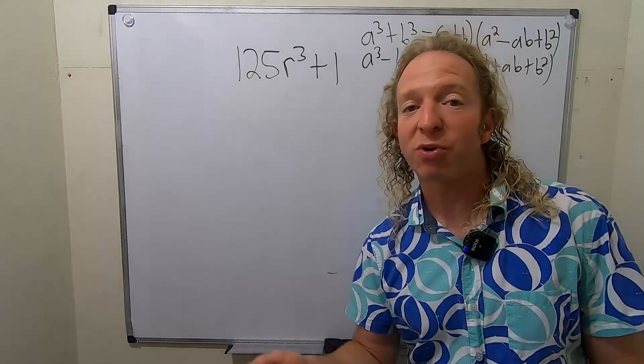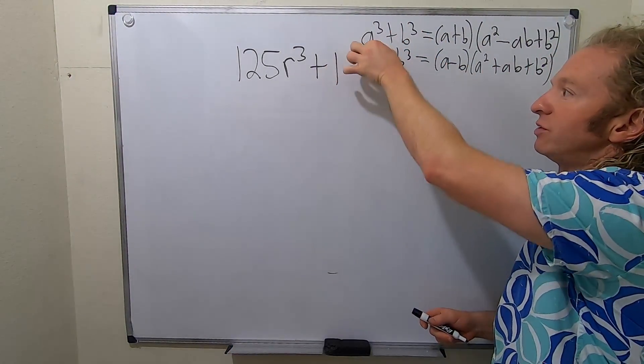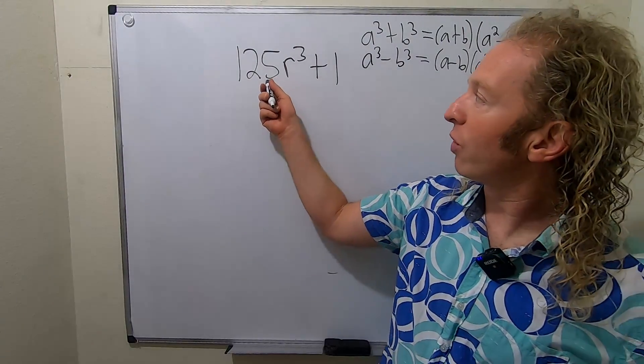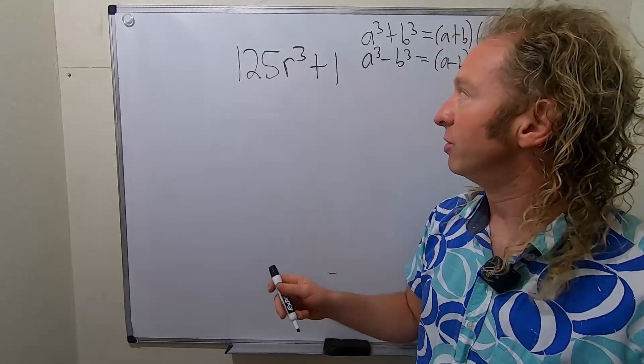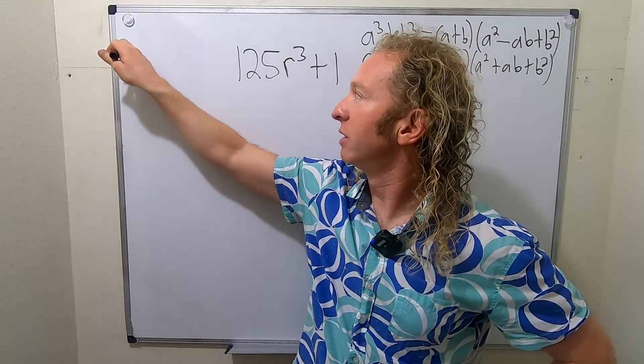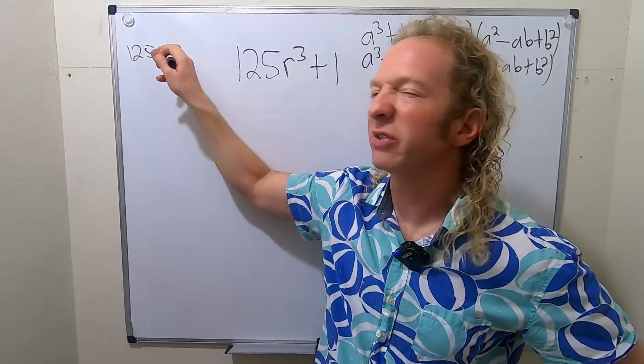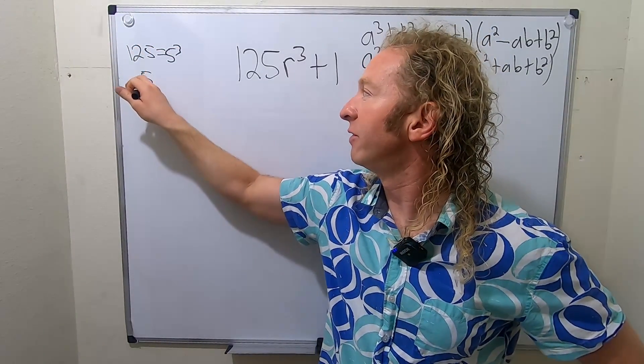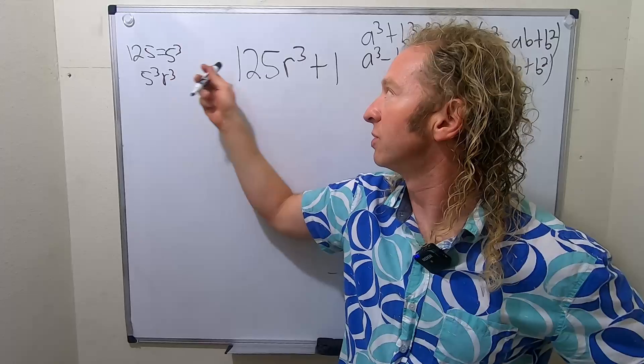Okay, so let's do this problem. We have to rewrite this into a sum of cubes. So we can write 125 as 5³, right? So you can do something like this. 125 is 5³. Do it on the side. So it's really going to be 5³R³, right? That's what this is going to become.